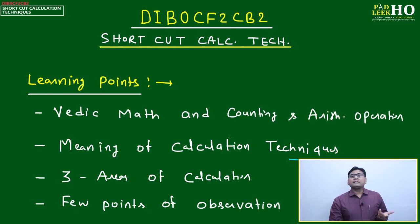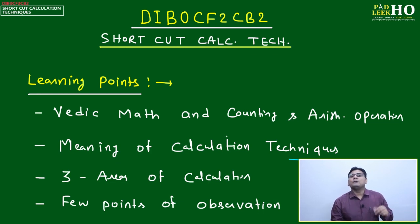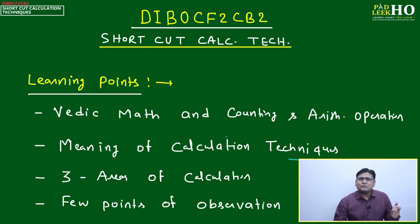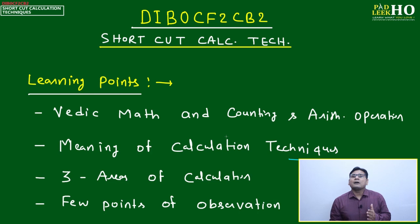If you apply Vedic math but your percentage of error is very high, there's no use — you'll land on the wrong solution and mark the wrong answer. One fundamental purpose of the calculation technique is to arrive at the right solution, meaning your deviation from the correct answer should be minimum — maximum five to seven percent — because generally the difference between two answer choices is more than 30 to 35 percent.